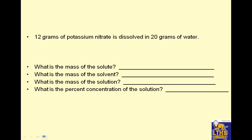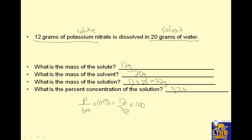12 grams of potassium nitrate is dissolved in 20 grams of water. So the water is the solvent. This is a smaller part, which is the solute. What is the mass of the solute? 12 grams. What is the mass of the solvent? 20. What's the mass of the solution? 12 plus 20 equals 32 grams. What is the percent concentration of the solution? Remember, that's always part over total times 100. So that is 12 over 32 times 100. 12 divided by 32 times 100 is 37.5%.